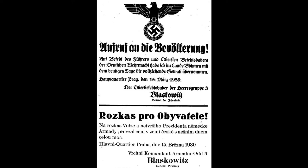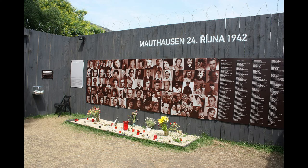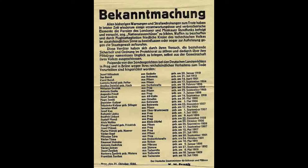Furthermore, by the First Vienna Award, Hungary received the southern territories of Slovakia and Carpathian Ruthenia, which were largely inhabited by Hungarians. As the Slovak state was proclaimed on 14 March, the next day Hungary occupied and annexed the remainder of Carpathian Ruthenia.